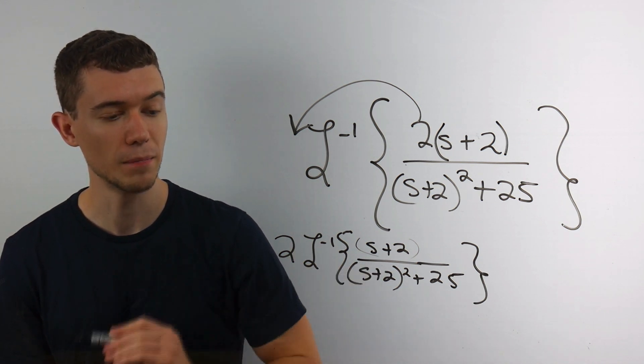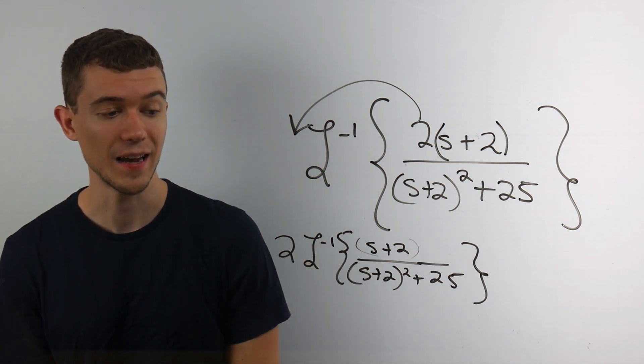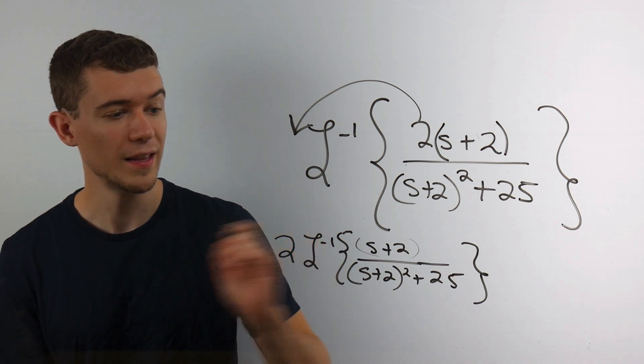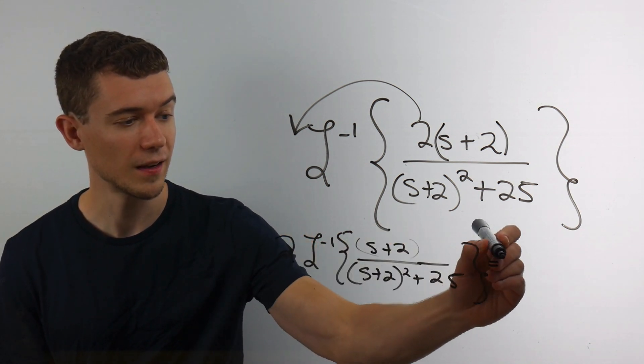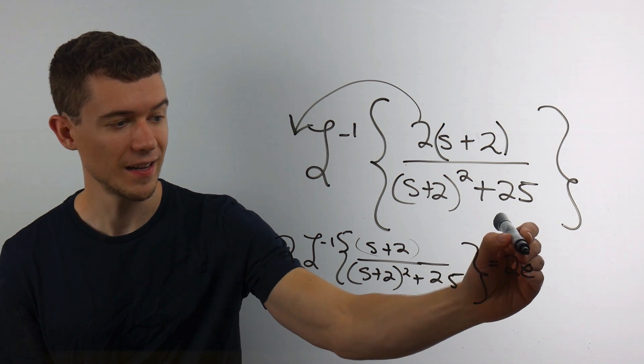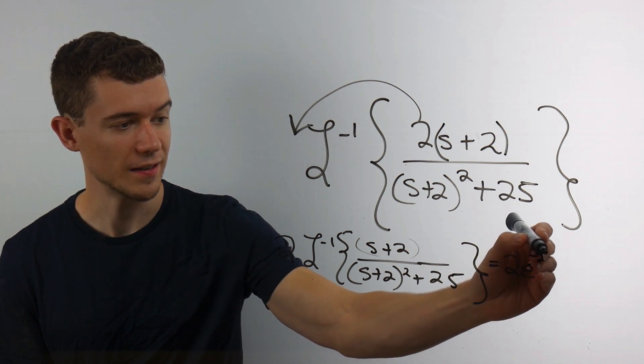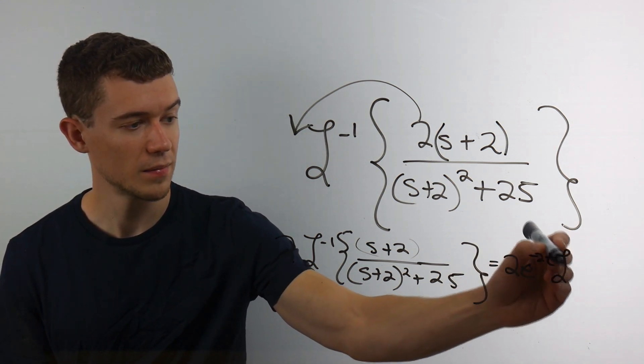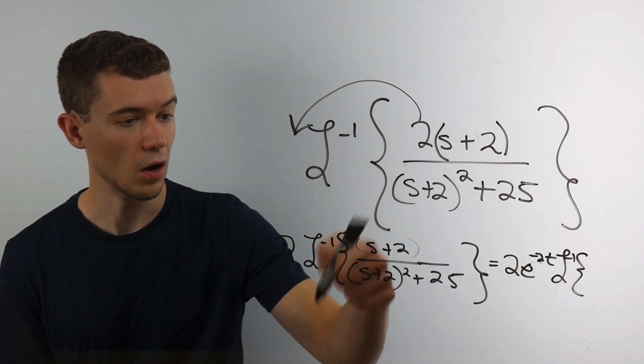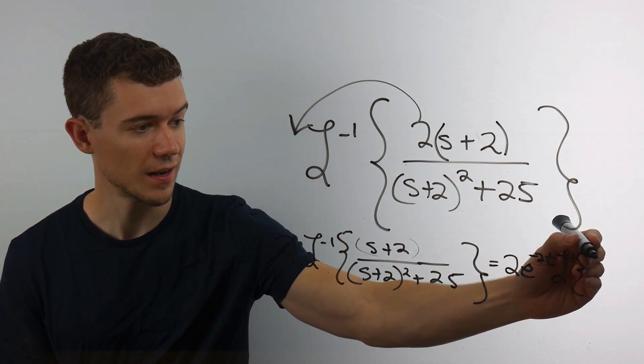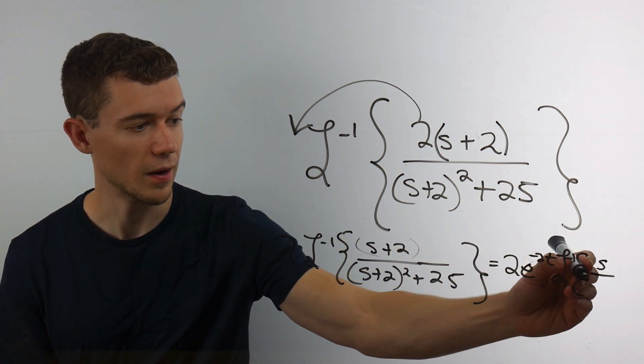in this case a being negative 2, this is really the same thing as e to the at times the Laplace of the other thing. So in this case, we just shift by that 2.